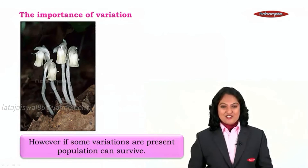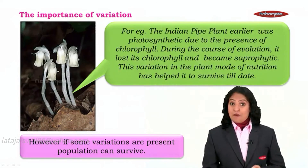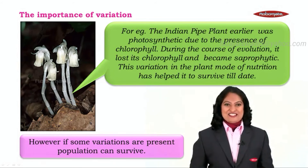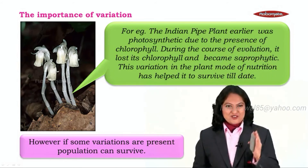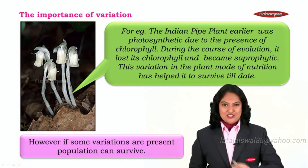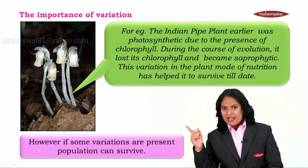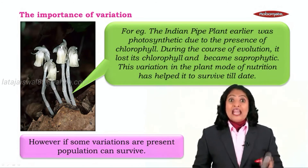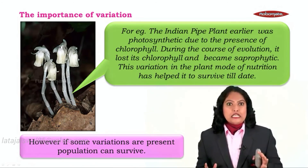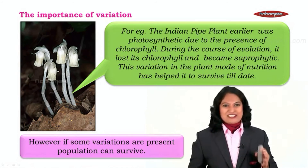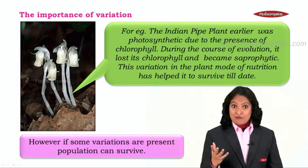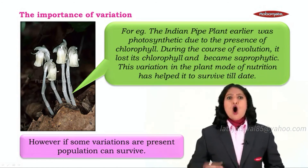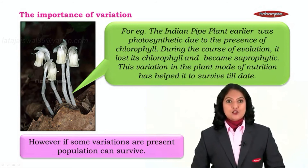However, if some variations are present, the population may survive. Variations can help an organism to survive in drastic niche changes. Let's take a classic example: the Indian pipe plant. Initially, this plant was green in color because it was rich in a pigment called chlorophyll. With the help of chlorophyll, it used to do photosynthesis — it was autotrophic. Over the period, it lost its chlorophyll, and could no more do photosynthesis.